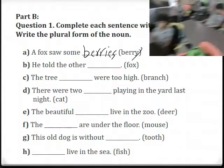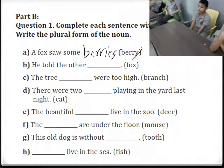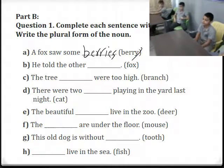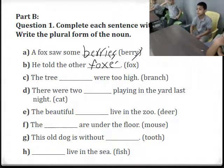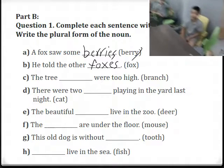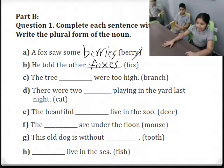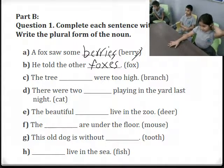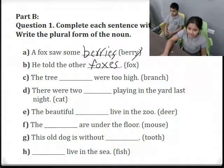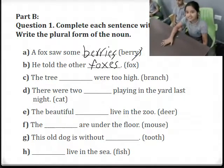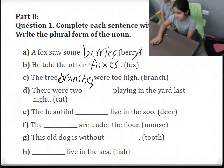Let's start. A: 'It goes to some berries.' Berry — how do we change it to plural? Berries. We cross the Y and add IES because what's before the Y is a consonant — R is a consonant. Next: 'He told the other foxes.' Fox — we add ES because fox ends with X. Next: 'The tree branches' — add ES because it ends with CH.